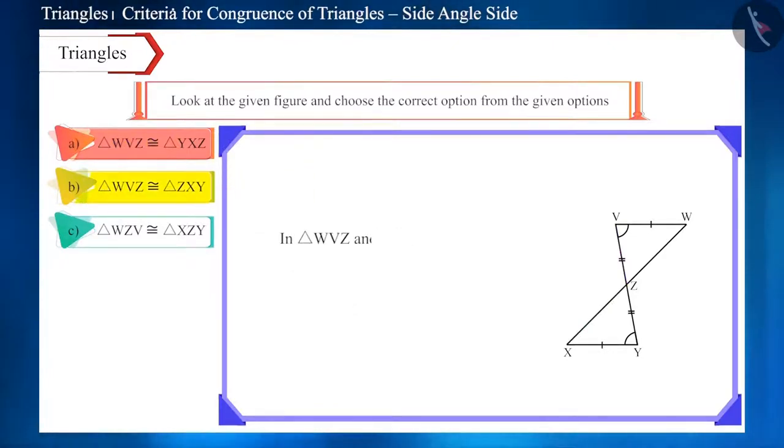Now, let's move to the second option. Here, according to the name of the triangles, is side WV equal to side ZX? No. Therefore, this option is also incorrect.